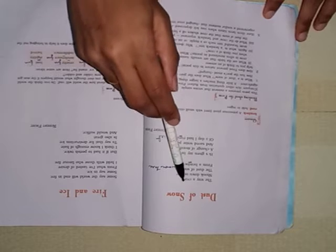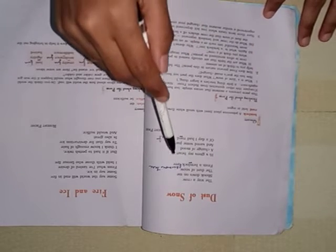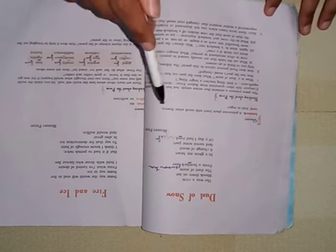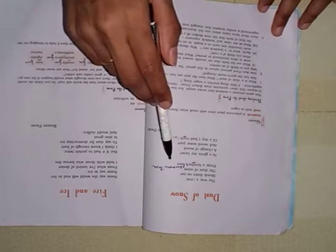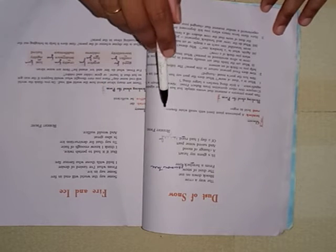Now, the sudden movement. Suddenly, the crow comes. And after coming the crow, what happens? A little dust of snow. It falls on the poet. The snow falls down on the poet who was standing under the hemlock tree.